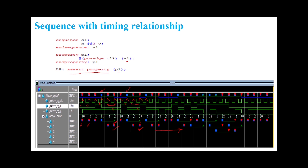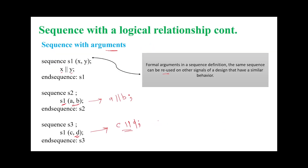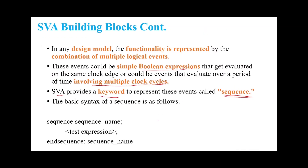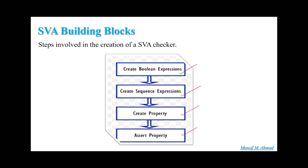So this is the explanation of timing relationships in SVA and the building blocks for defining an SVA checker. I hope you have understood the concept of basic SVA building blocks — what is a property definition, what is a sequence definition, how to define them, what is a boolean expression definition, and how to assert a property. I hope you enjoyed this video. Thanks for watching.